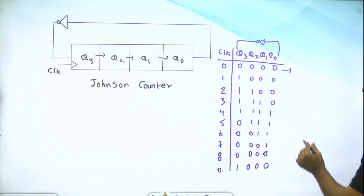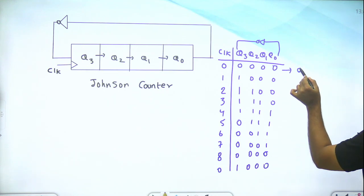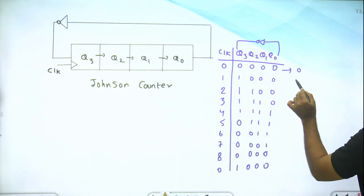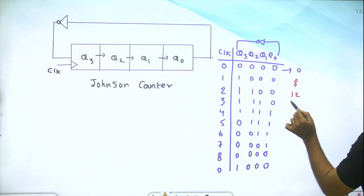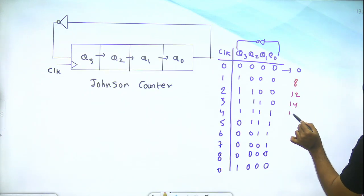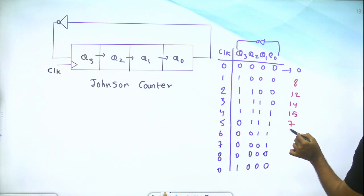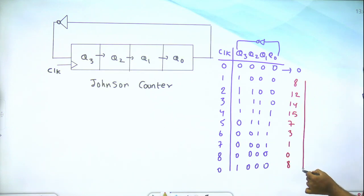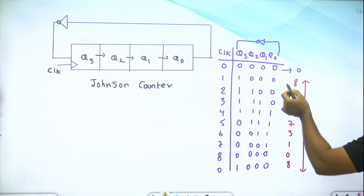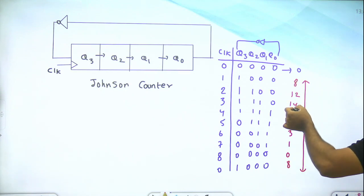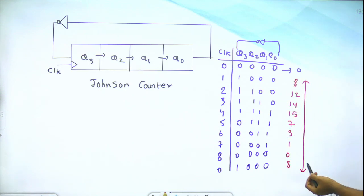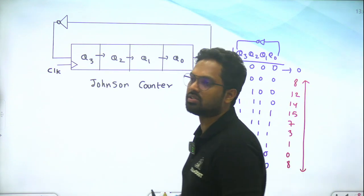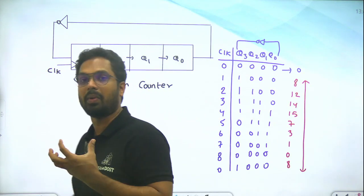It is generating 8 different patterns. The output sequence is: 8, 12, 14, 15, 7, 3, 1, 0, and back to 8. Like that it is generating some sort of random sequence — 8, 12, 14, 15, 7, 3, 1, 0. This is what we call a pseudo-random or semi-random sequence generator, or pattern generator.